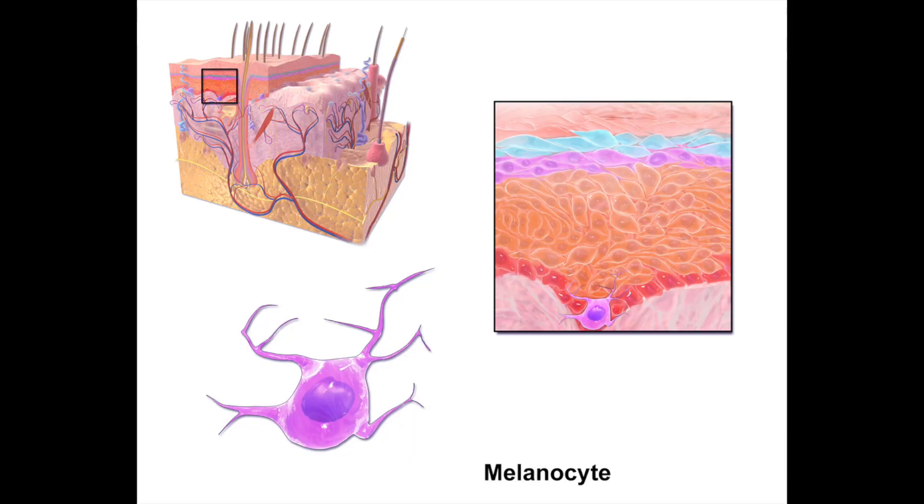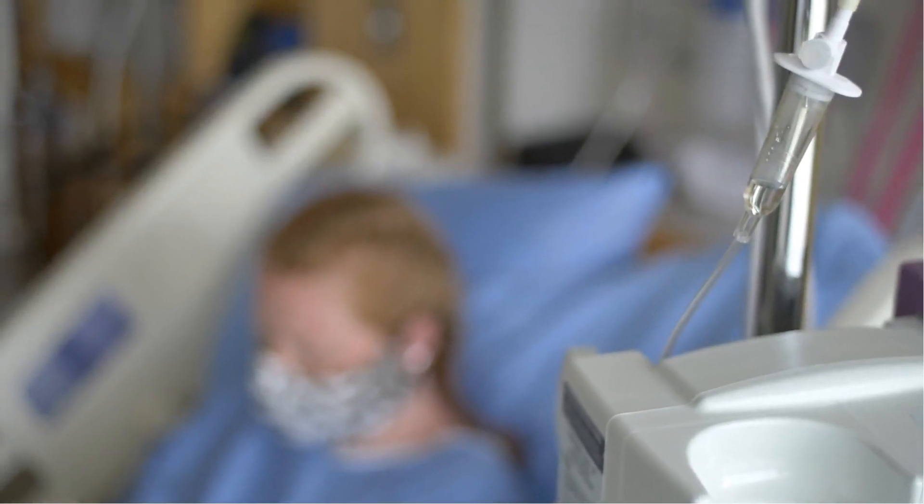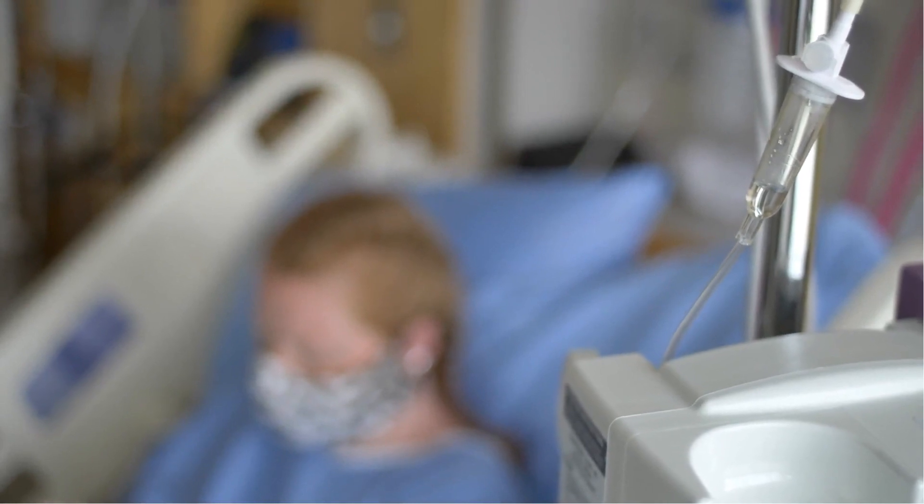Lastly, we will cover melanomas, the most dangerous form of skin cancer. It grows very fast, spreads very early, and therefore it's very dangerous. Melanomas develop from pigment-producing cells called melanocytes, and if undetected and untreated they can be deadly within just a few months. A melanoma might develop on parts of your body not normally exposed to sunlight, but as with the previous skin cancers, exposure to ultraviolet rays may increase your likelihood of developing it.